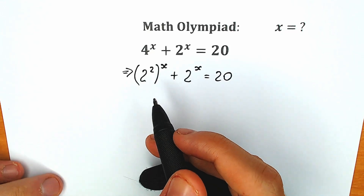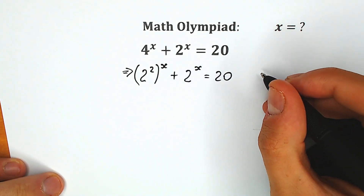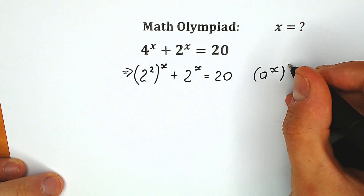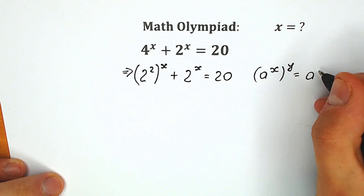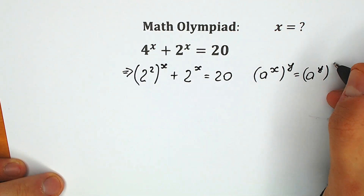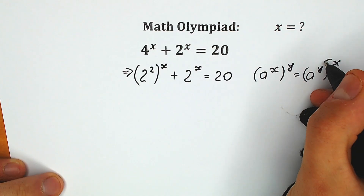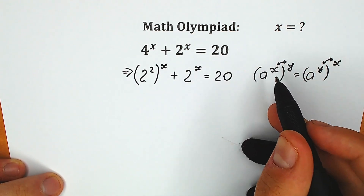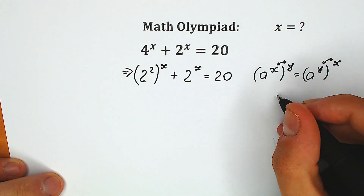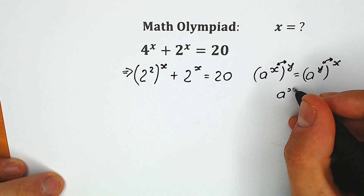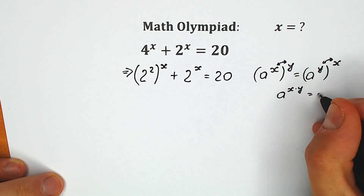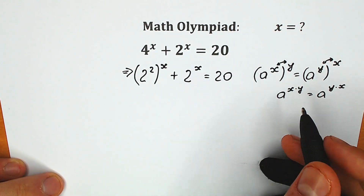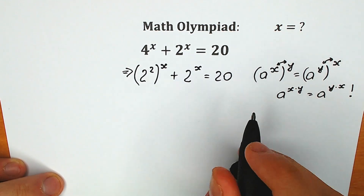There is a great property — someone calls this the rule of interchange. So if we have a to the power x, raised to the power y, we can easily write it as a to the power y, raised to the power x. We can swap these powers because we have a to the power x times y, which equals a to the power y times x — we can swap positions because this is multiplication.